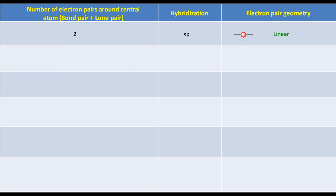If there are three electron pairs around the central atom, to find out the hybridization, just write s, p. Put one on s and the remaining two on p. So the hybridization will become sp2. The electron pair geometry will be trigonal planar.